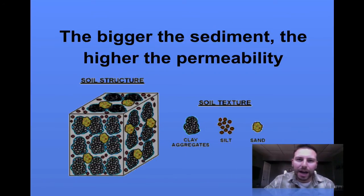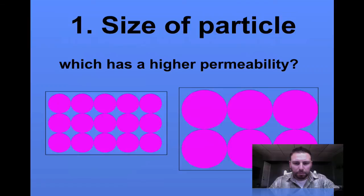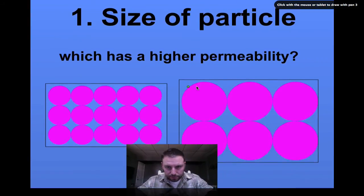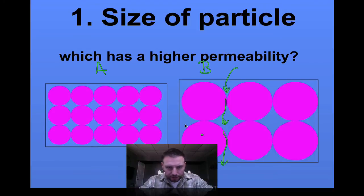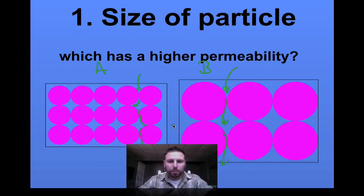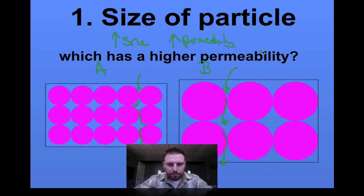The bigger the sediment, the higher the permeability. With these diagrams coming up next, we can see that a little bit more. So we have A and we have B over here. With B, you can see these big spaces where water can go and move through and eventually out. Here, because they're smaller spaces, it's a little bit harder for the water to get through. So bigger spaces or the bigger the particle, we increase permeability — increase size, increase permeability. Kind of a direct relationship.